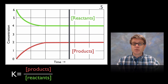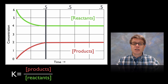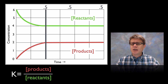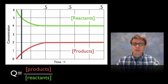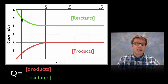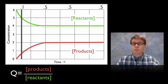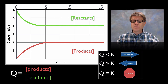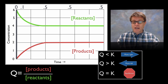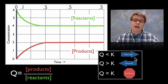Moving further back along the equilibrium curve, the K value stays the same — 0.5 — because the equilibrium constant remains constant as long as we're at equilibrium. Now let's calculate Q values before we reach equilibrium. Moving back to an earlier point: products are around 0.5, reactants around 5, giving Q ≈ 0.1. Even further back, products are 0 so Q = 0. Whenever Q is lower than K, the reaction is going to move towards the right — from reactants to more products.